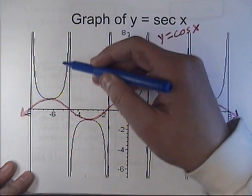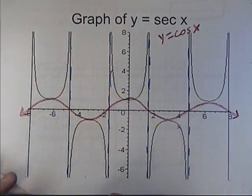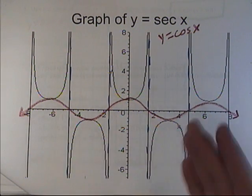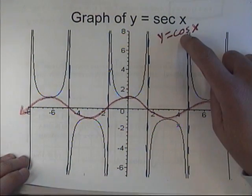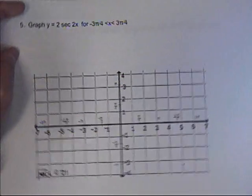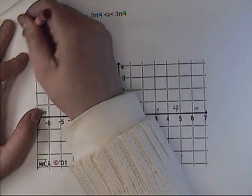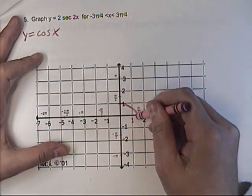So if I have my asymptotes here, we're going to make the same kind of relationship. So I'm going to begin with cosine, and then we're going to end up with secant, building upon our cosine. All right. So here we go. The first graph I'm going to draw is just my basic cosine graph, which looks like this.